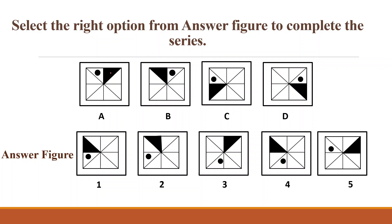One step in the clockwise direction — it came here in option number B. Two steps in the anticlockwise direction: one and two — it came here in option number C. Now three steps in the clockwise direction: one, two and three — it came here in option number D. Now four steps in the anticlockwise direction: one, two, three and four. Means the circle should be here in the answer figure.